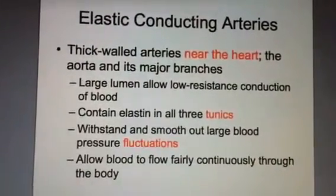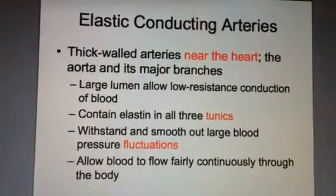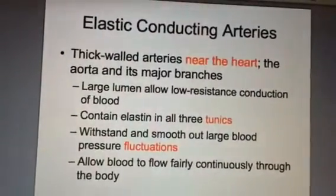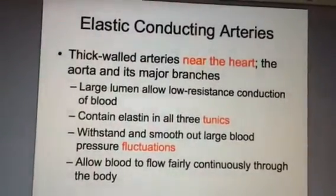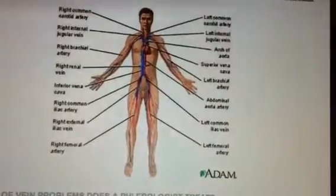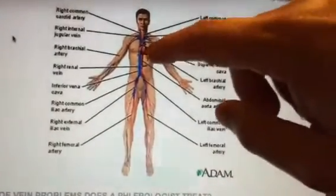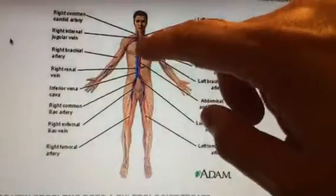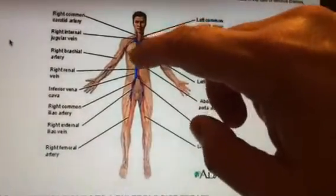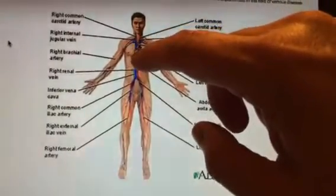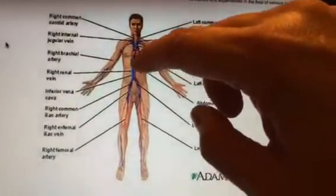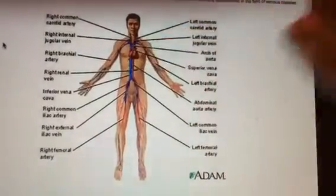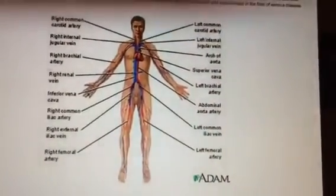We're back now with slide 6, and we're looking at elastic arteries. These are arteries that are very, very near the heart. If you look at a diagram and you see something like this, we're talking about arteries that are really close to the heart — these brachial arteries and things like this in the arms, and some of the ones close to the inferior part of the heart.